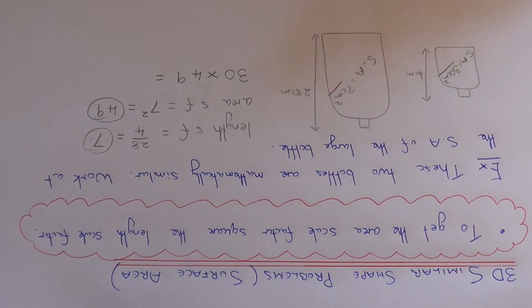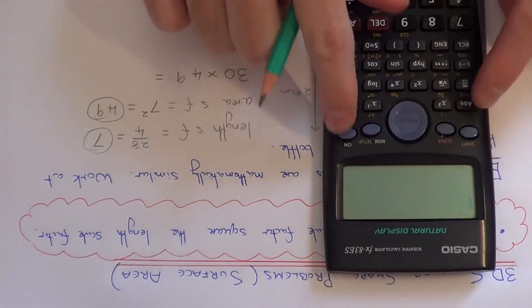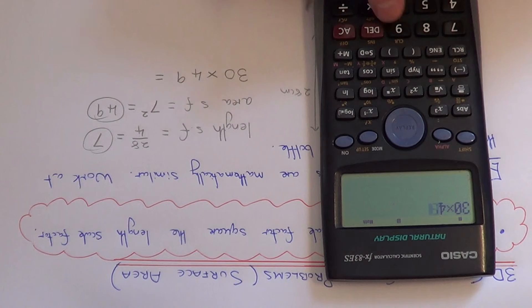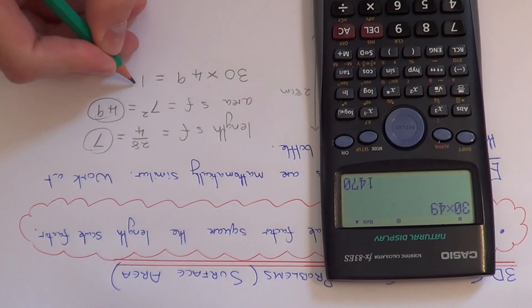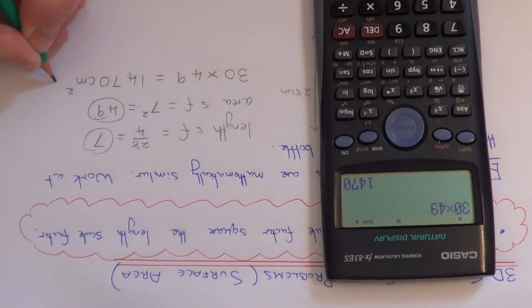So just get your calculator. 30 times 49 is 1470cm squared.